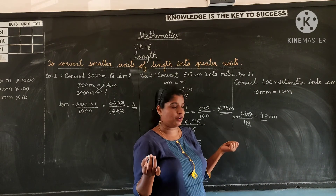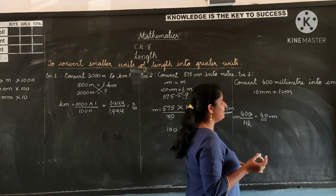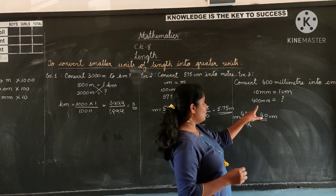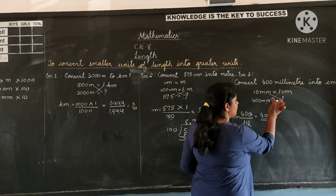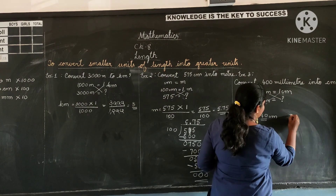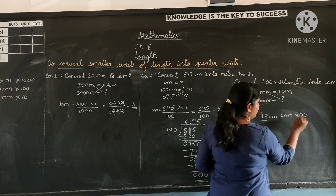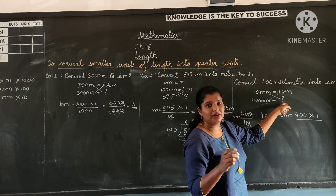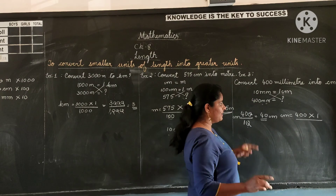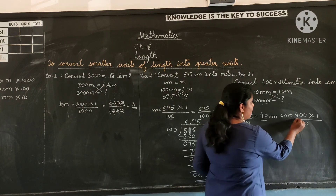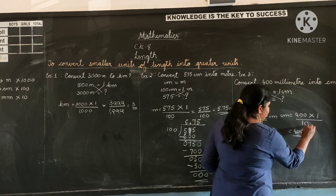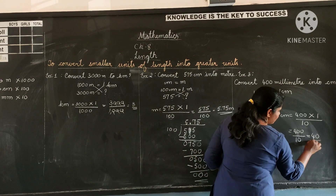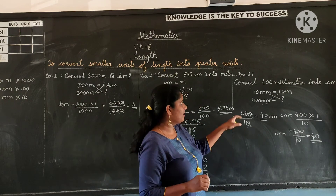Let us verify the answer using cross-multiplication. The question is: how many centimeters make 400 millimeters? Cross-multiplying, centimeter is equal to 400 into 1, and the number with the question mark becomes the denominator, which is 10. So 400 into 1 gives 400, divided by 10 equals 40. So 40 centimeters make 400 millimeters — confirmed.